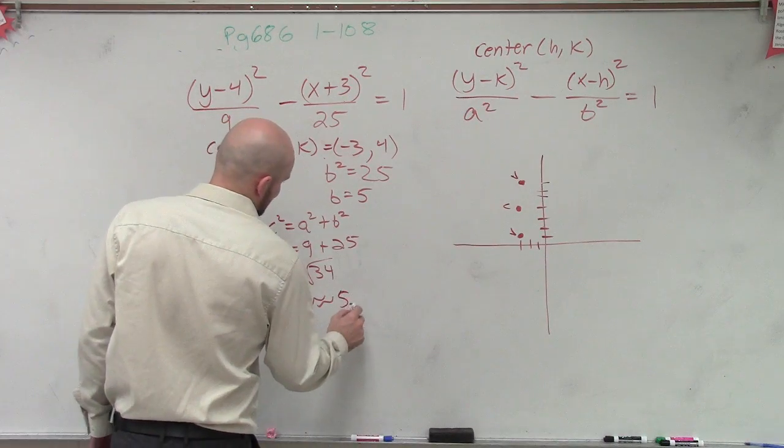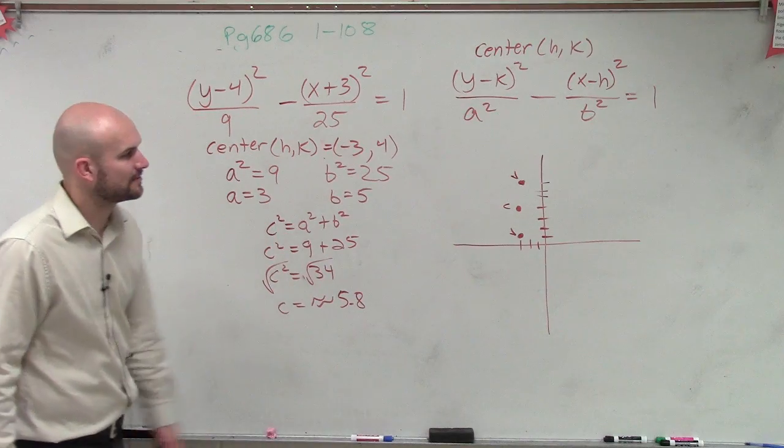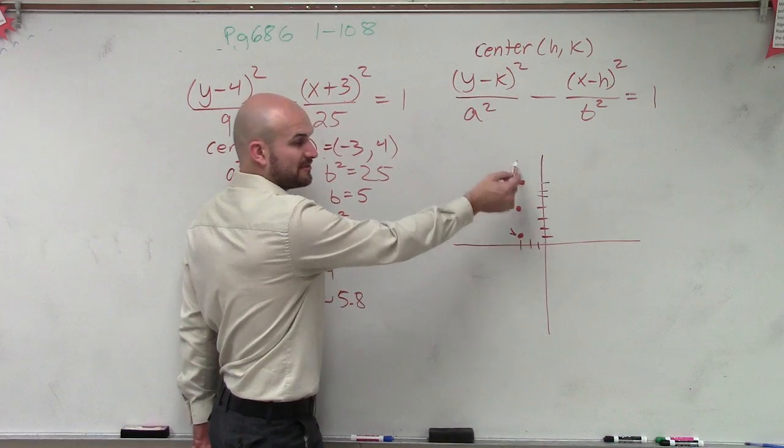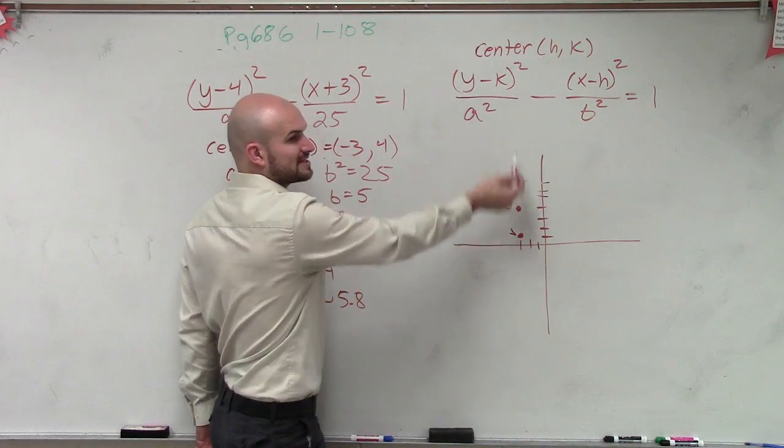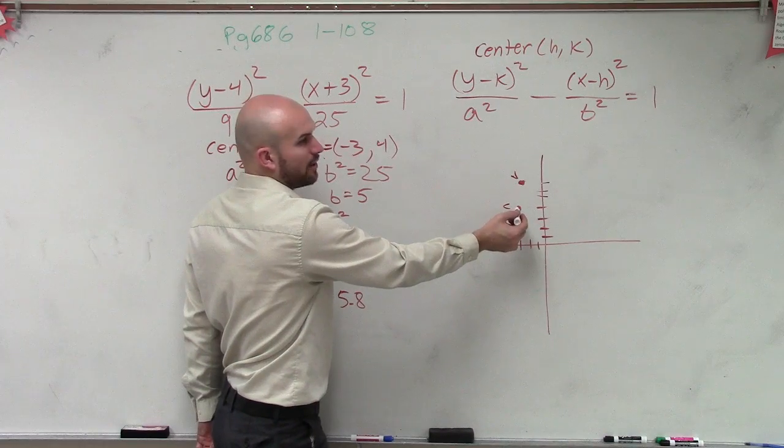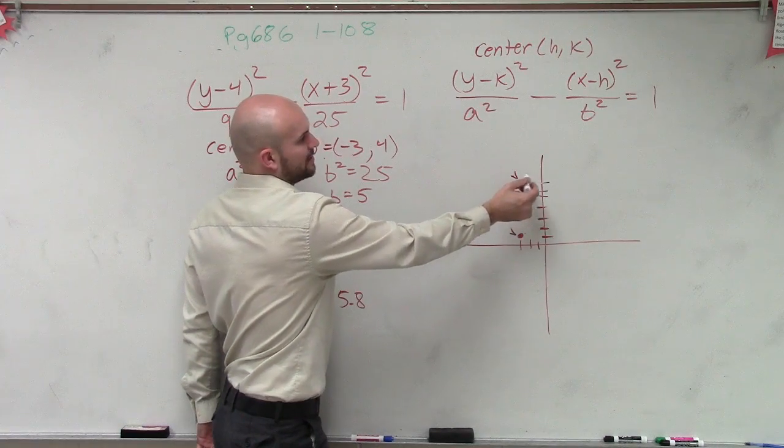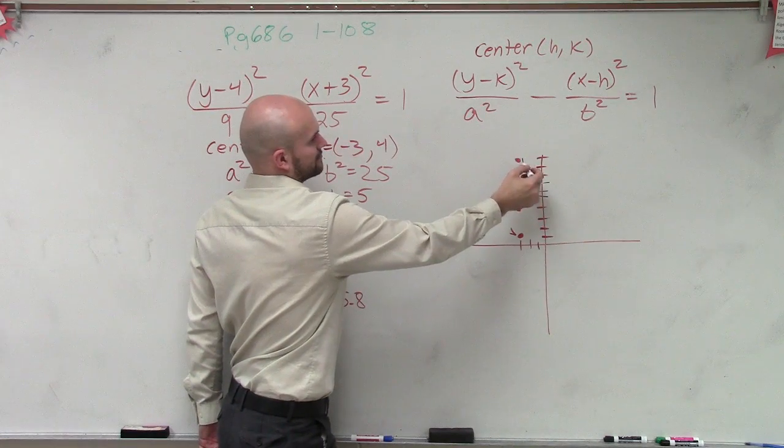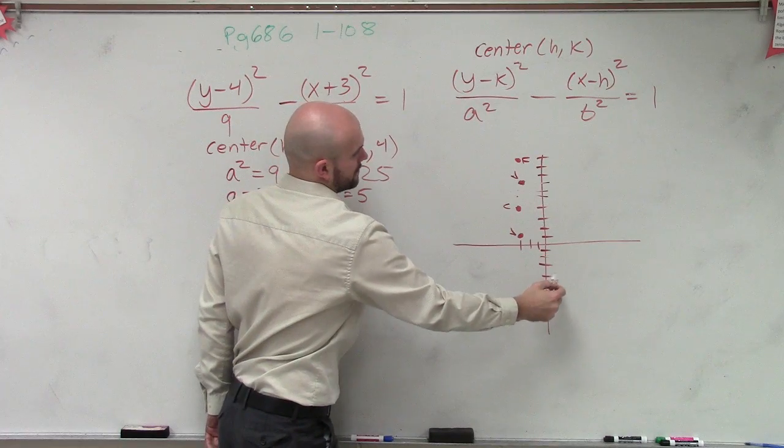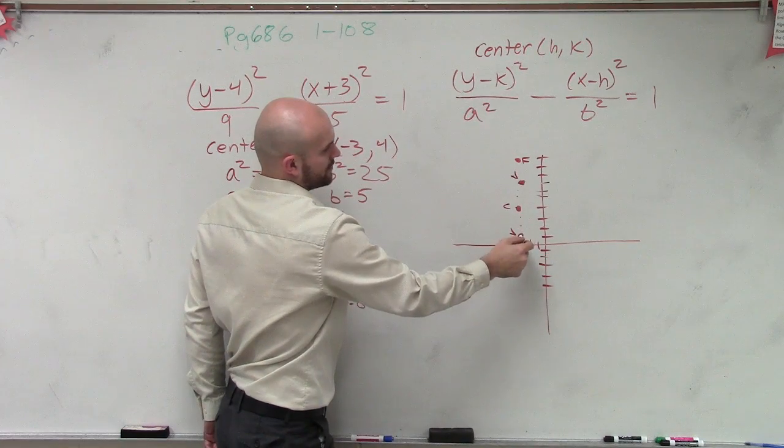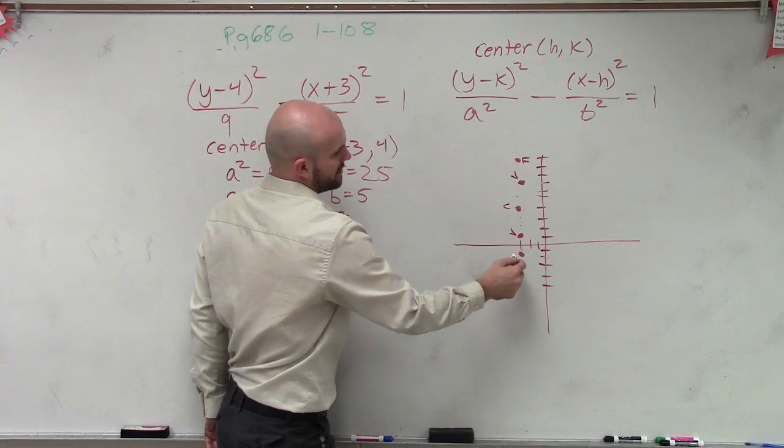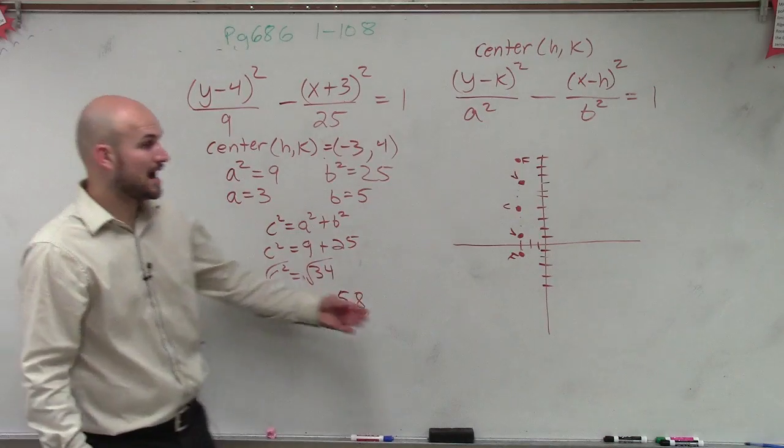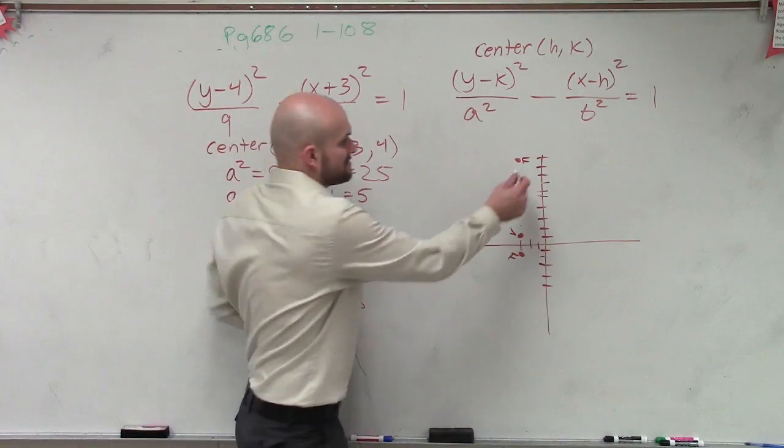So we're just going to approximate 5.8 because I want to sketch the graph. So instead of my center, now I'm going to go up and down 5.8, right? Because remember, the foci, then the vertices in the center are all on the same transverse axis. So now I go up roughly 5.8, 1, 2, 3, 4, 5.8. Then I go down 5.8. So 1, 2, 3, 4, 5, so .8 is roughly somewhere around there.